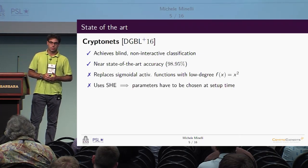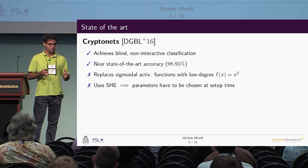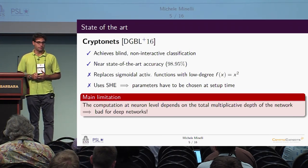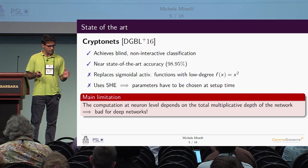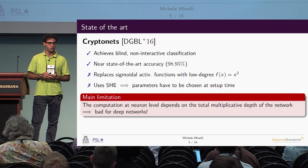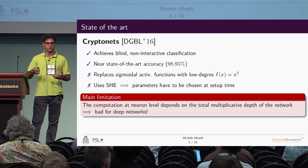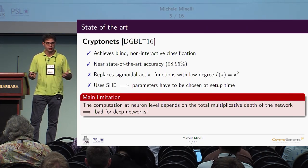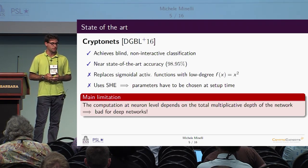The biggest problem is that CryptoNets uses somewhat homomorphic encryption, meaning parameters have to be chosen at setup time taking into account the entire structure of the system. The main limitation is that the computation for each neuron depends on the total multiplicative depth of the entire network. This is particularly bad for deep learning, where we can have models with tens or even hundreds of layers, making the approach quickly inefficient and not scaling well.